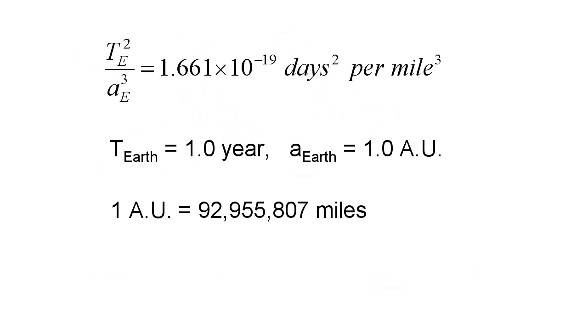For T, instead of using days, we'll use the year. And for A, instead of using miles, we'll use the astronomical unit. Remember, one astronomical unit is the average distance between the Earth and the Sun. With T equal to 1 and A equal to 1, then T squared over a cubed equals 1, which is a lot easier than that other 1.661 number.